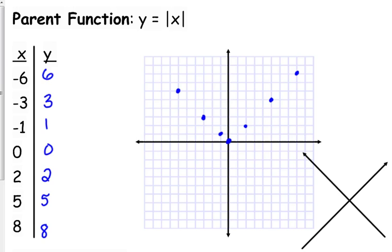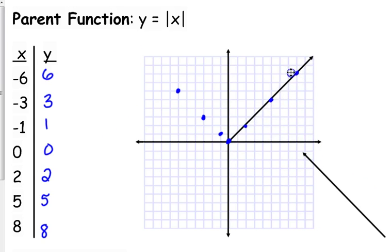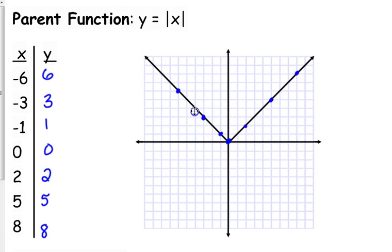You will notice that the points fall along straight lines — that is a special property of absolute value functions. The two sides are straight lines that meet at a sharp point in the middle. We call that the vertex, except in this case it is a sharp point, unlike quadratic ones where they are kind of rounded.